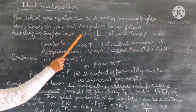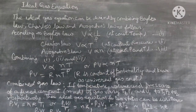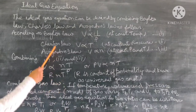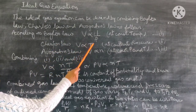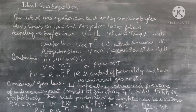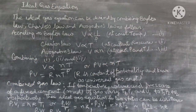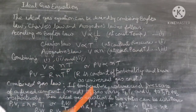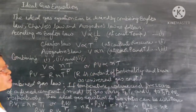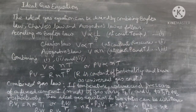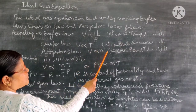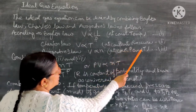The ideal gas equation can be derived by combining Boyle's law, Charles' law, and Avogadro's law. According to Boyle's law, V is inversely proportional to P at constant temperature. According to Charles' law, V is directly proportional to absolute temperature at constant pressure. According to Avogadro's law, V is directly proportional to n, the number of moles, at constant pressure and temperature.